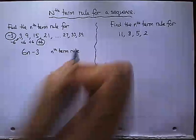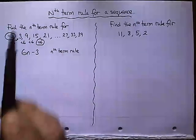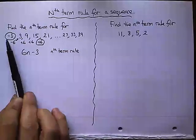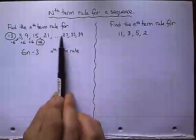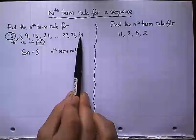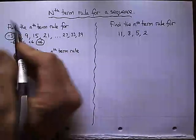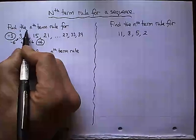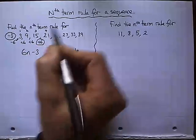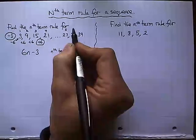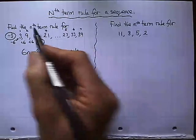Now, why do we work out an nth term rule? Well, let's have a look at these terms that we've worked out before. So 3, 9, 15, 21, 27, 33, 39. Let's look at where these terms lie. This is my first term, second term, third term, fourth term, fifth term, sixth term, seventh term. And it goes on. This sequence could be never ending.